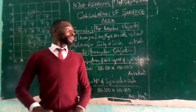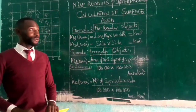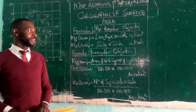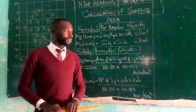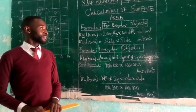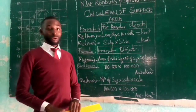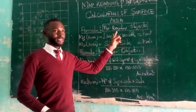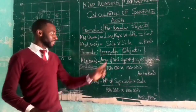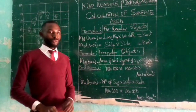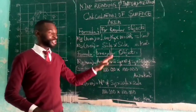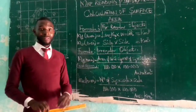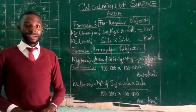Hello everyone, you are welcome to the Lensile Network where we will be doing our tutorials in map reading. Today we shall be working on calculation of surface area on the map, and we are going to look at how we can calculate the surface area of a regular object as well as the surface area of an irregular object. There are two different formulas, so please follow up right to the end to see how the formulas are applied.